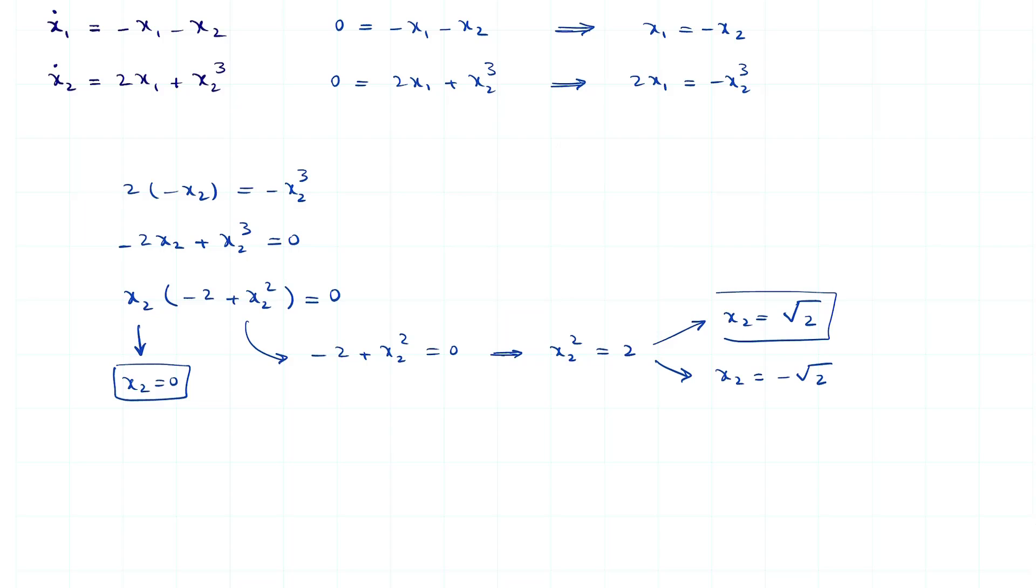So far, we only found values for x2. Now, what about x1? We can either substitute the values that we obtain for x2 into this equation or into this equation, and it doesn't matter which equation we choose. We choose the one that is easier for us. So, let's choose the first equation. x1 equals minus x2 and then x2 is 0, x1 is also equal to 0.